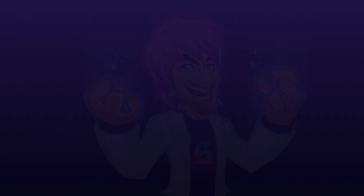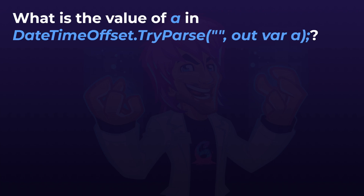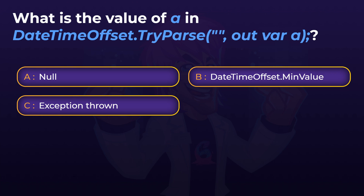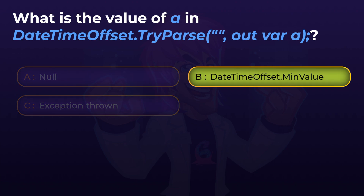Last question — let's see if any of you get this right. What is the value of 'a' in this expression? The expression is valid code. Do we get null as the value of 'a', DateTimeOffset.MinValue, or is an exception thrown? The answer is DateTimeOffset.MinValue. You would know this if you paid attention when writing the code — when entering the out variable, the IntelliSense explicitly states that when try parse is not successful, the variable passed in is set to DateTimeOffset.MinValue. That information is important to know, as it will come in useful in future.